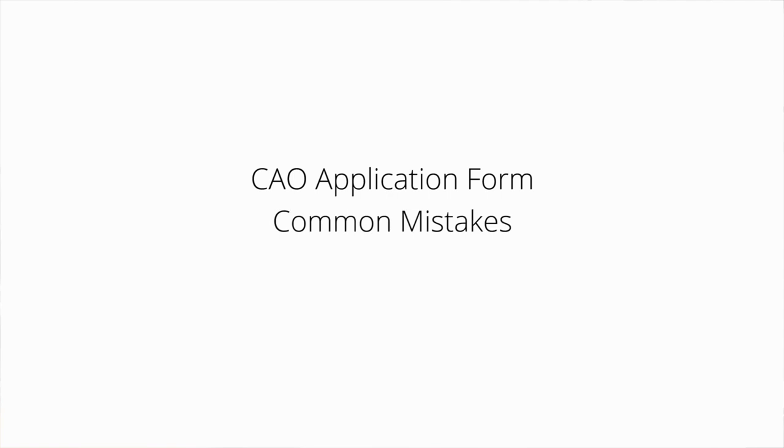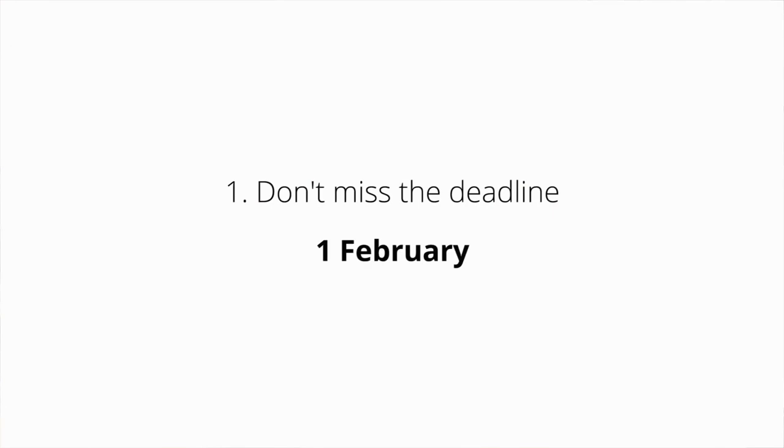The five main mistakes that people make when they fill out the CAO. Number one: students missing the deadline. This seems very obvious, but the deadline for the CAO is the 1st of February. You do it online for 40 euro. However, everyone is encouraged by CAO to use the deadline of the 20th of January, where you fill it out online for 25 euro.